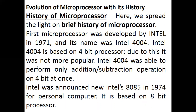Let us see the history of the microprocessor. The first microprocessor was developed by Intel in 1971 and its name was Intel 4004. The Intel 4004 is based on a 4-bit processor. Due to this, it was not very popular. The Intel 4004 was able to perform only addition and subtraction operations on 4 bits at once. Intel then announced a new Intel 8085 in 1974 for personal computers, based on an 8-bit processor.